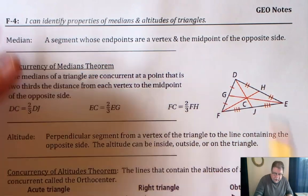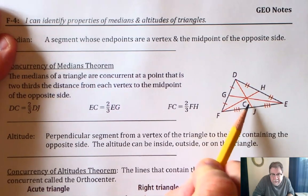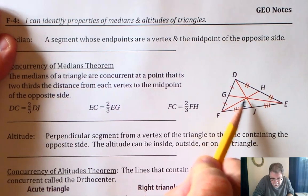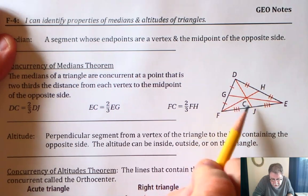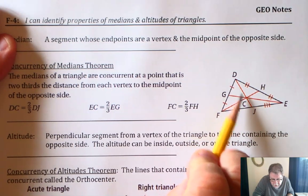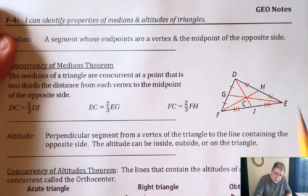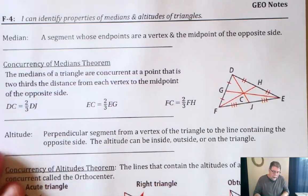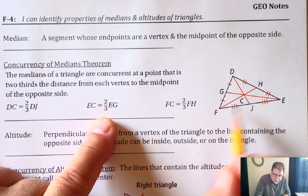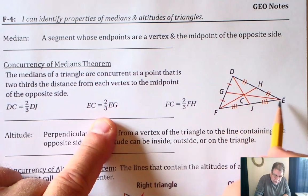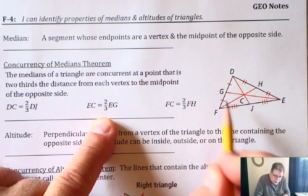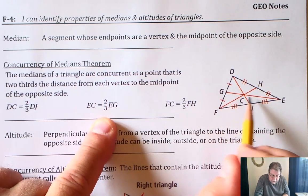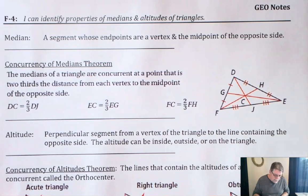I like to think of it as: there's one length, and then there are two of those lengths on the other side. So it's like thirds — this length is a third, there's another third, and another third. The same thing is true for EC: EC is two-thirds the length of the whole segment, and the same is true for FC.